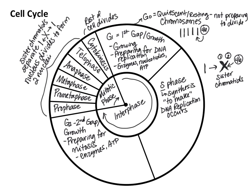Some cells go into the G0 phase forever, meaning they will never divide again. Other cells, it's just a temporary phase, and eventually they'll get some sort of cellular signal to start preparing to divide and dividing again.